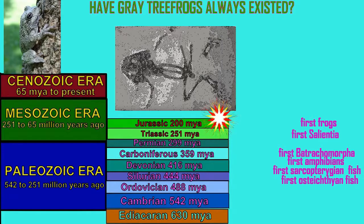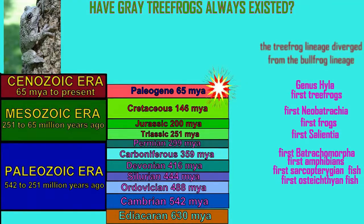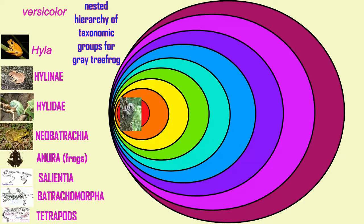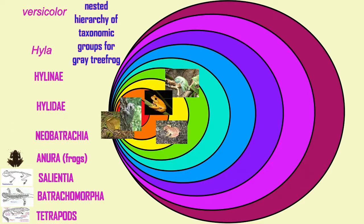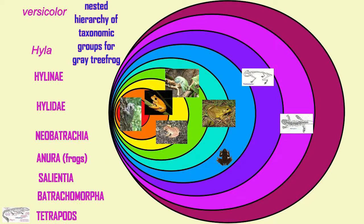Gray tree frogs have not always existed. The fossil history reflects that the first tetrapods long precede any frogs, followed by the first Batrachomorphans, then the first Salientians, then the first true frogs, the first Neobatrachain frogs, and so on. The traits which define gray tree frogs evolved over a series of intermediate stages, and the modern classification of gray tree frogs reflects that. They separated from other lineages at different points in history, and so their groupings with other biological groups reflect the degrees of similarity and the years since the divergence of their two lineages — all supporting the evolutionary model's predictions.